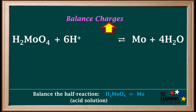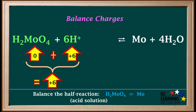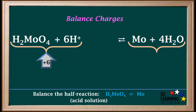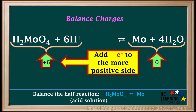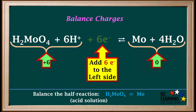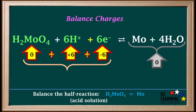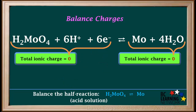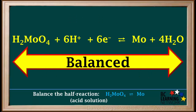The last step is to balance charges. On the left side, we have a total ionic charge of zero plus positive six, which is equal to positive six. Looking on the right side, Mo and 4H₂O both have a zero charge, so the total charge on the right side is zero. Remember, to balance charges, we add enough electrons to the more positive side to make the charges equal. Because the charge on the left is positive six and the charge on the right is zero, we must add six electrons to the left side. The total ionic charge on the left side is now zero plus six plus negative six, which equals zero. So the total ionic charge on each side is zero, and the charges are balanced.